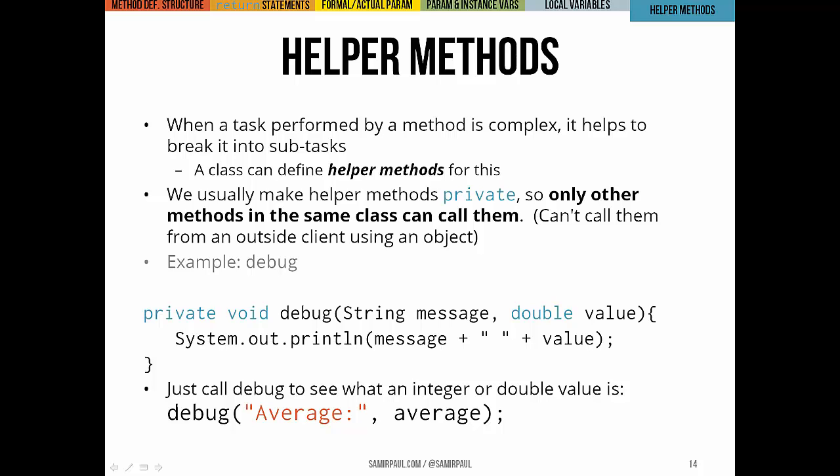Now sometimes you'll be writing a method, and the thing you're trying to do in that method is so complex that it makes more sense to break it down into a couple of subtasks. But you know that no client, no outside user of an object of your class, no outside client, is ever going to have to call that method by themselves. That method's job is really only to support another method that somebody actually would call from the outside.